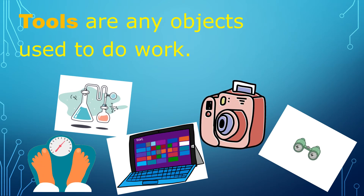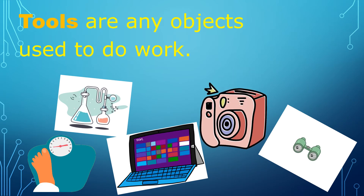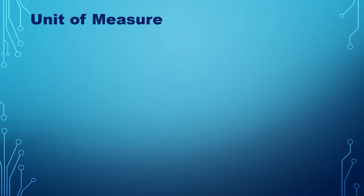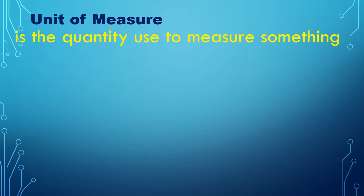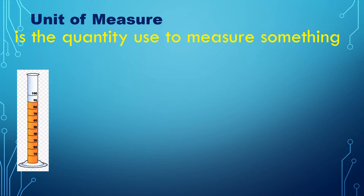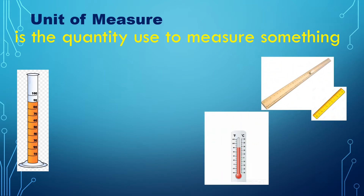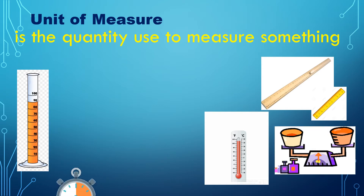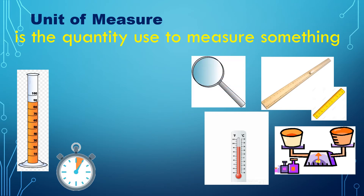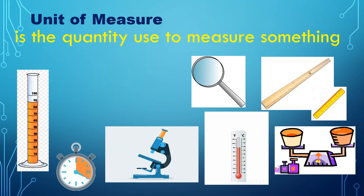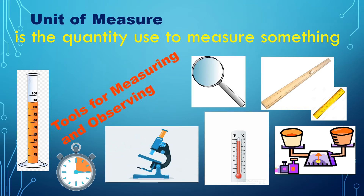Tools can also help collect and record data. Let us identify the tools for measuring and observing. The unit of measure is the quantity used to measure something. Here are examples of measuring and observing tools: graduated cylinder, ruler and meter stick, thermometer, balance, clock and stopwatch, hand lens or magnifying glass, and microscope. We use these tools to measure and observe.